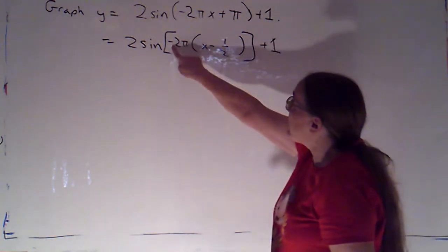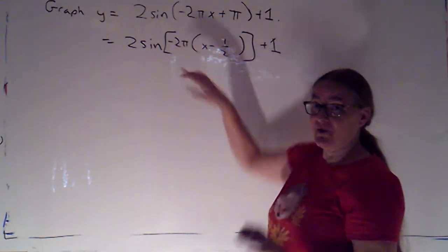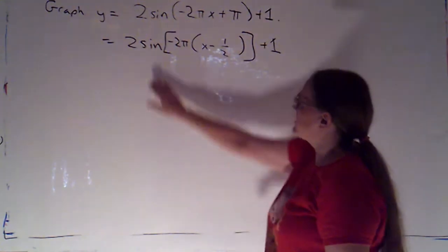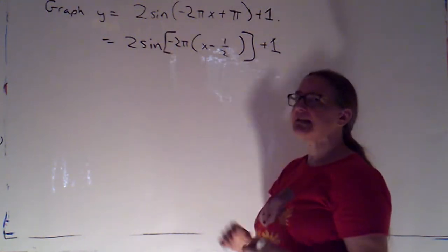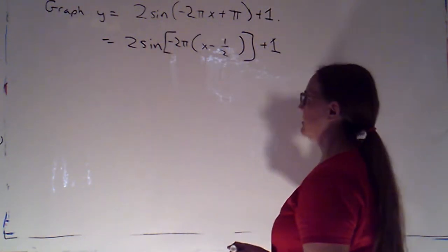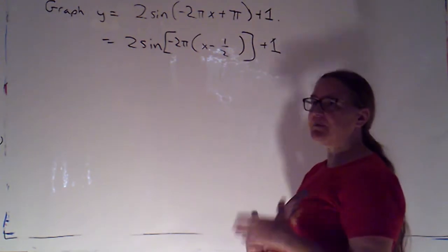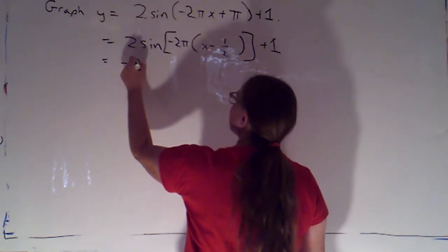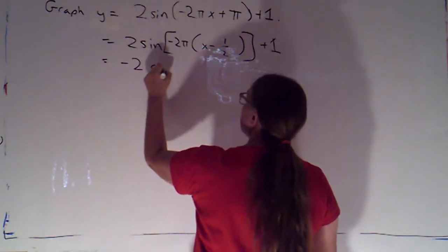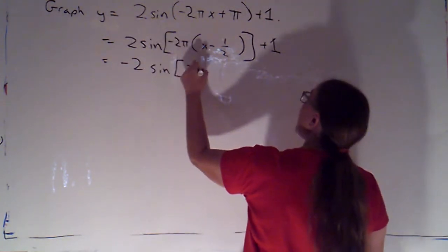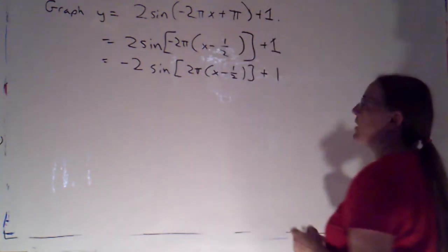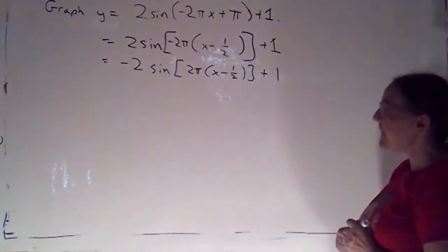Now, when I'm multiplying by a negative number, I want to deal with that up front before I start graphing. So this was sine. Sine is an odd function. Opposite input gives me the opposite output. So I can bump that negative sign to the outside and say this is negative 2 sine of positive 2π times (x - 1/2) + 1.